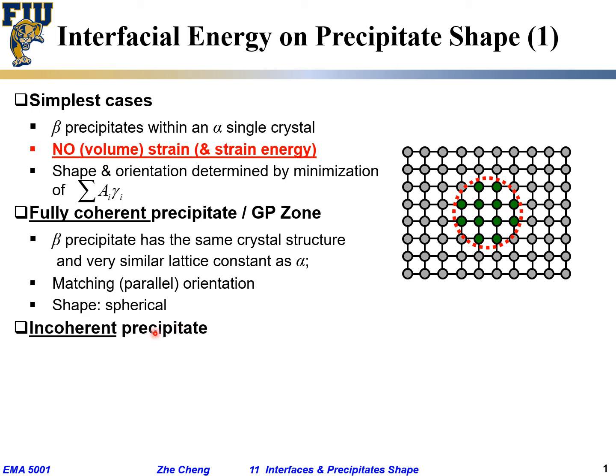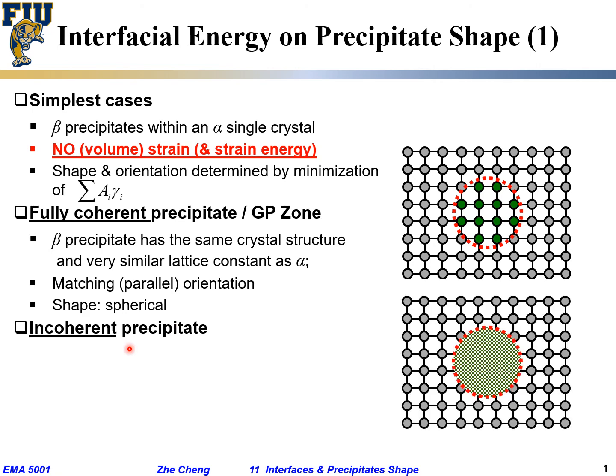On the other hand, if we are talking about completely incoherent precipitate, something like this—like between iron and carbon. Between iron and carbon, the carbon has much, much smaller lattice parameter than iron, half of it, roughly. In this case, if it's only half of it, they don't even try to match at all. Very different crystal structure, no match of any crystal plane.